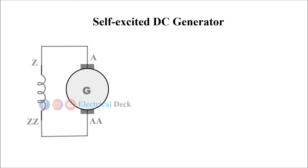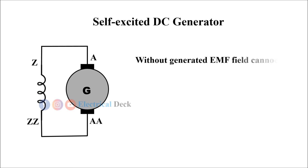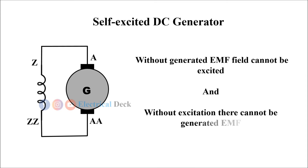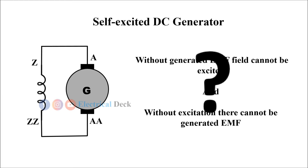Now let us see the self-excited DC generator. In self-excited DC generator, the field winding is supplied from the armature of the generator itself. Here, you may get a question: without generated EMF the field cannot be excited, and without excitation there cannot be generated EMF. Then, how does a self-excited DC generator work?